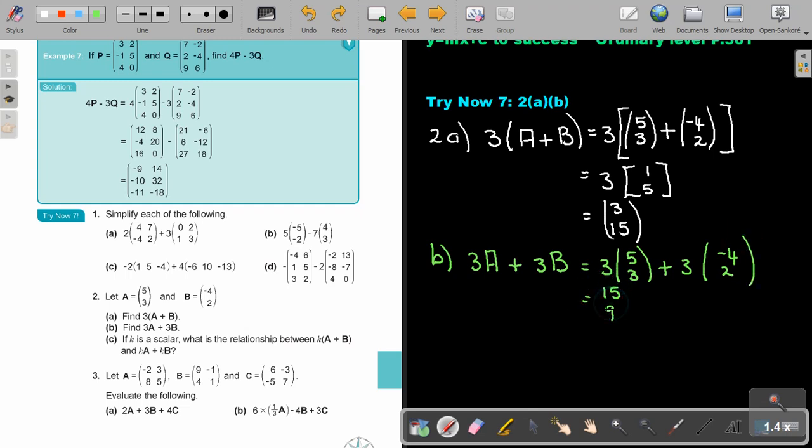3 times 5 is 15. 3 times 3 is 9. 3 times negative 4 is negative 12. 3 times 2 is 6. Simplifying, 15 minus 12 is 3, and 9 plus 6 is 15.